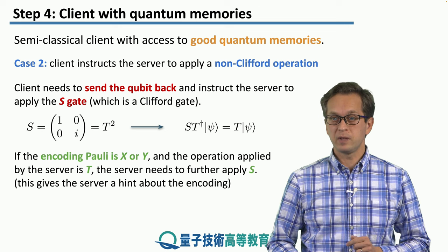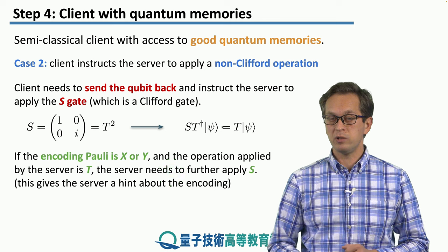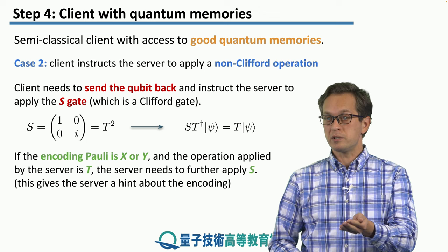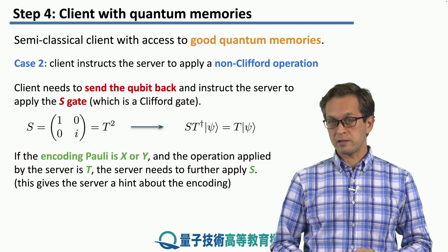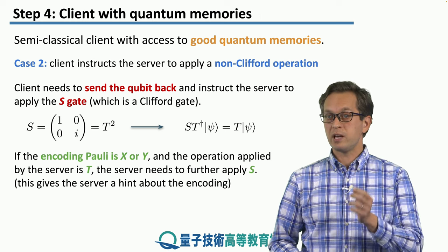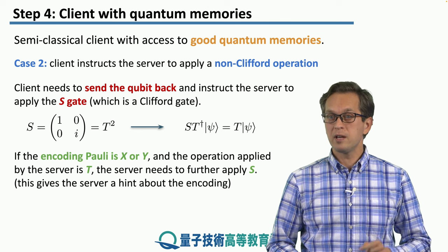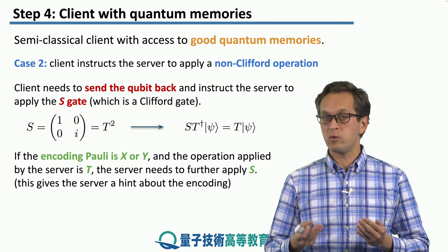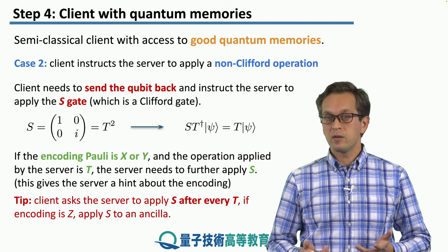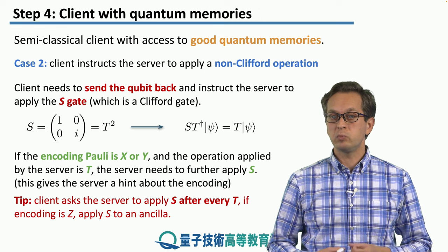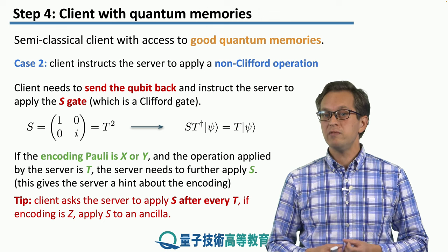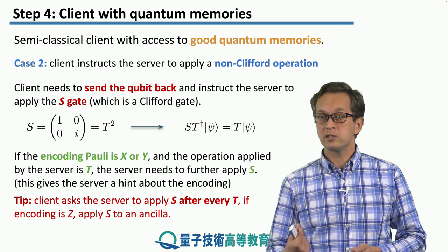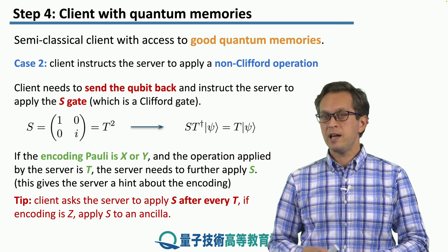However, there's a big problem here: this gives the server a hint about the encoding. Every time we encode using an X or Y Pauli matrix and send the qubit back asking to apply an S gate, this tells the server that the one-time pad operation was X or Y — leaking information to the server, which the client wants to prevent. What the client can do is ask the server to apply an S after every T gate, even if the encoding was Z and applying S is not necessary. When applying S is not needed, the client can simply send an ancilla qubit, ask the server to apply the S gate, and then discard the qubit.